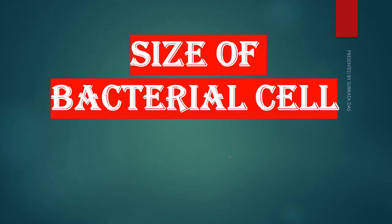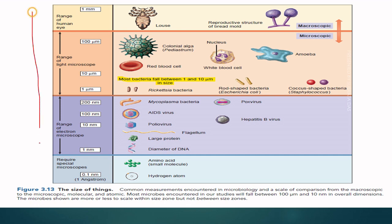Next is the size of bacterial cells. In the human eye, we can see any object whose size is more than 0.1 millimeter. So if an object is less than 0.1 millimeter, we cannot see those things with our normal human eye. Those things we have to see by the light microscope.